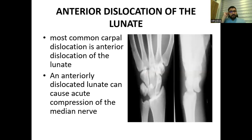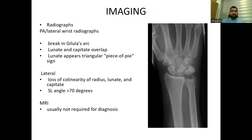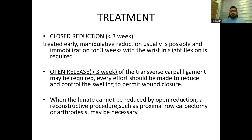The most common carpal dislocation is anterior dislocation of the lunate, which can cause acute compression of the median nerve. Radiographic findings include a break in the Gilula arc, overlapping lunate and capitate, and the triangular 'piece of pie' sign on AP view, indicating lunate dislocation. On lateral radiographs, there is loss of collinearity of the radius, lunate, and capitate, and the SL angle increases to greater than 70 degrees. Treatment is closed reduction if less than three weeks, and open release if greater than three weeks. If unreducible, proximal row carpectomy or arthrodesis may be necessary.